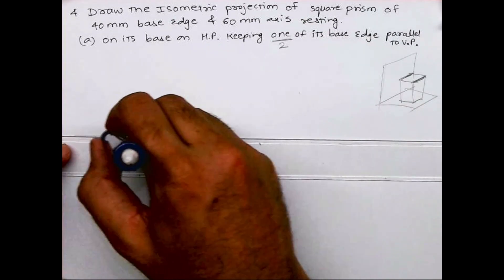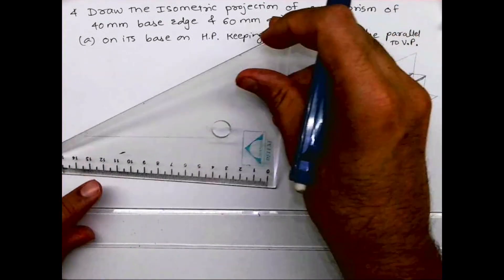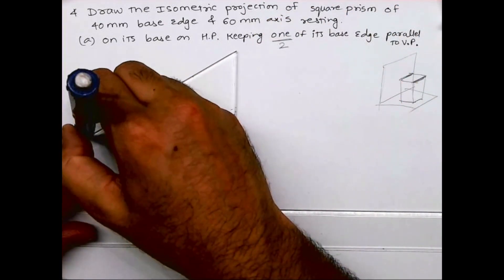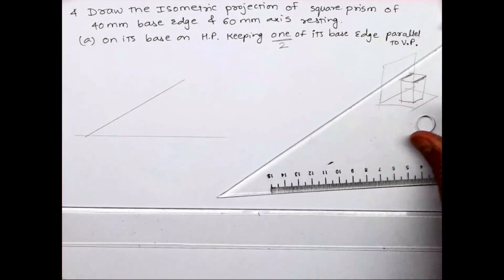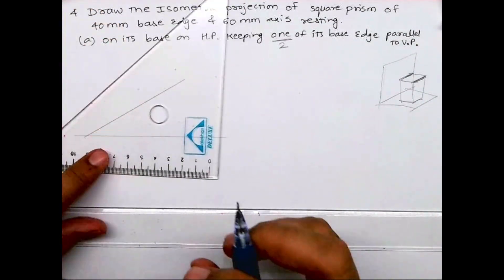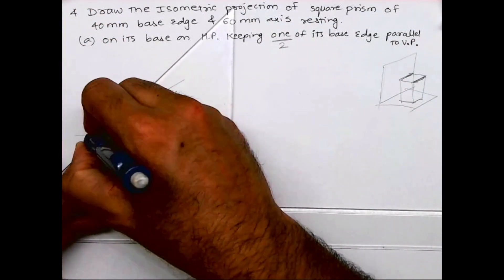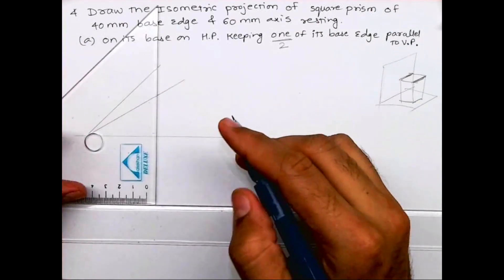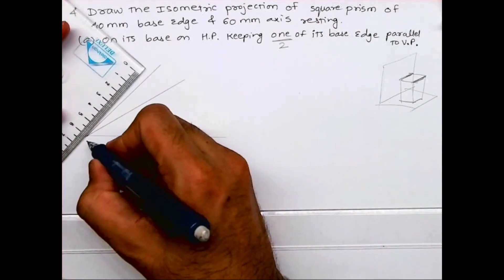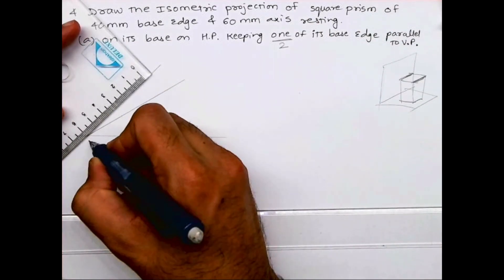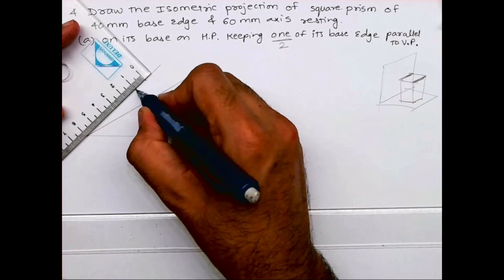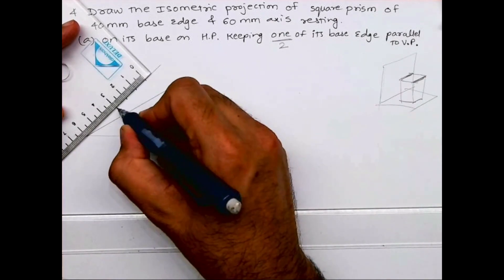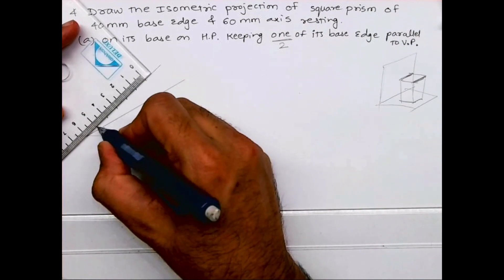So first we will draw the isometric scale. You'll draw 30 degree and 45 degree. Remember, you need to do all the labeling in exams. How it is to be done in isometric, I'm just drawing it for my drawing purpose, but in exam if you are doing it, you do it properly. You write everything - 30, 45, everything you write.